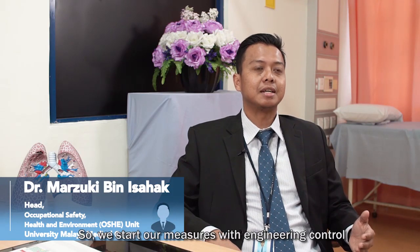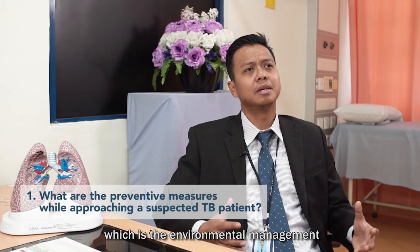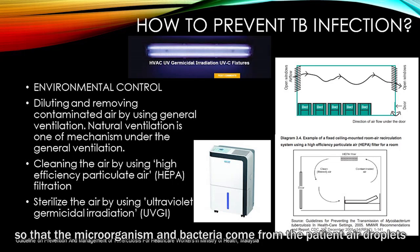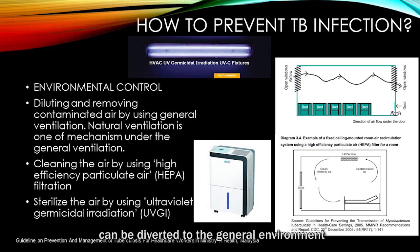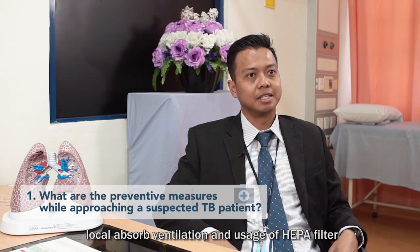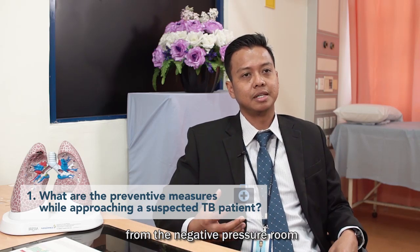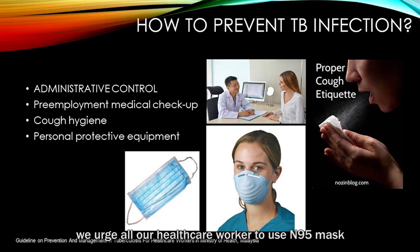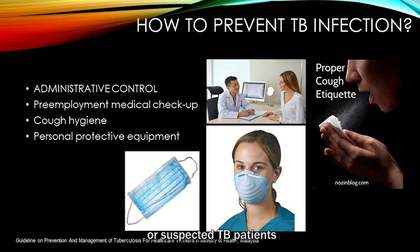Going to the next hierarchy, which is engineering control — the environmental management. The primary prevention will be by having a negative pressure room, so that all the microorganisms or bacteria from the patient can be contained. The secondary prevention under environmental control will be local exhaust ventilation and usage of a HEPA filter to clean the air. Under personal protective equipment, we urge all healthcare workers to use N95 masks when dealing with TB patients or any suspected TB patient.